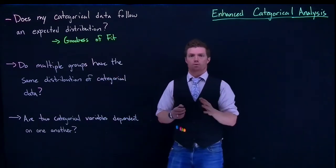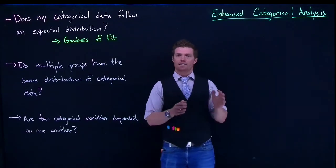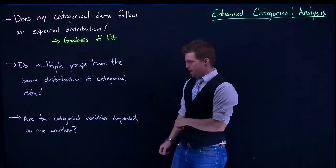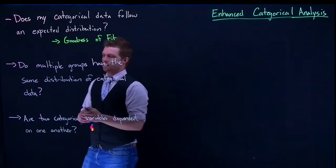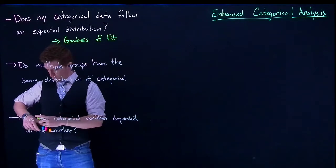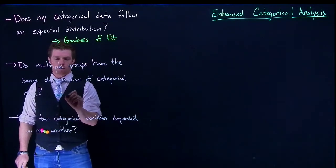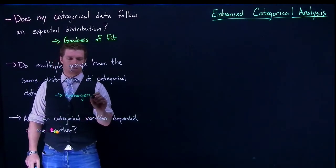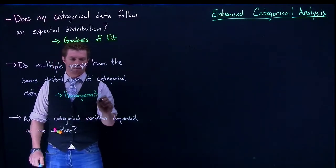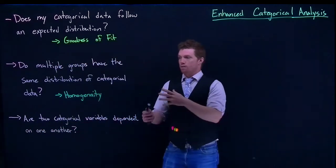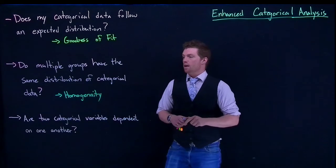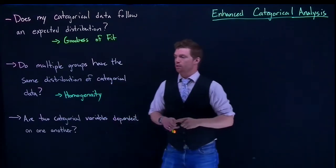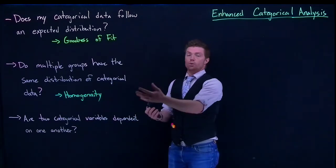We could take a sample from New York, take a sample from Chicago, and take a sample from LA, and compare them one to another. This is called a test of homogeneity. The null hypothesis here is that all of them follow the same distribution, and the alternative is that at least one of them is different.